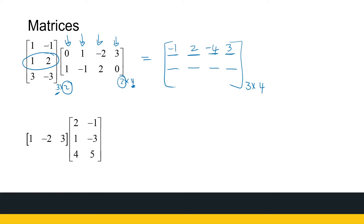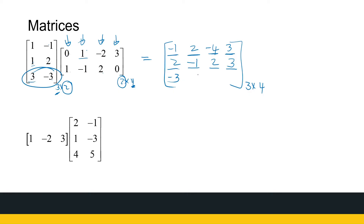For row two, I take the inner product between row two and column one: zero plus two times one is two. Row two, column two: one minus two is minus one. Row two, column three: minus two plus four is two. Row two, column four: three plus two plus zero is three. For the last row, inner product with the four columns gives: zero minus three; three plus three is six; minus six minus six is minus twelve; and nine plus zero is nine.